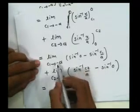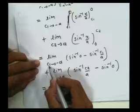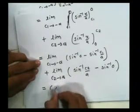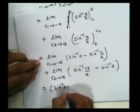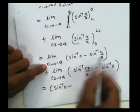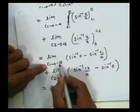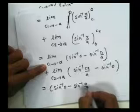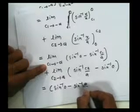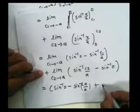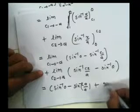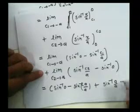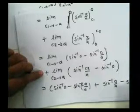Applying the limit form in the given bracket, we have sin inverse of 0, then putting c1 equal to minus a, we have sin inverse of minus a by a, plus sin inverse of a by a, minus sin inverse of 0.